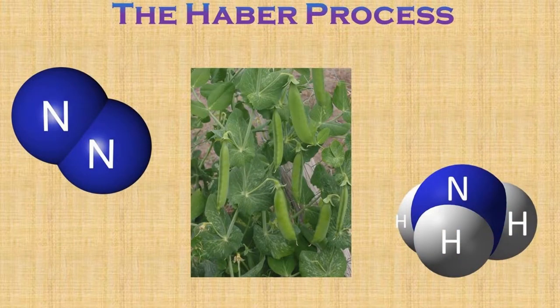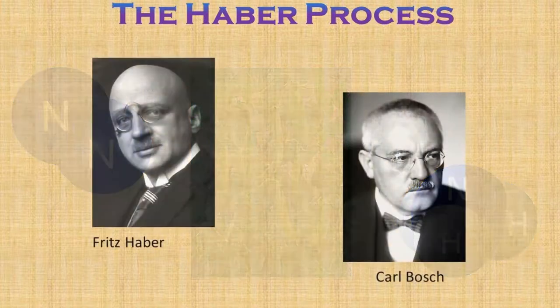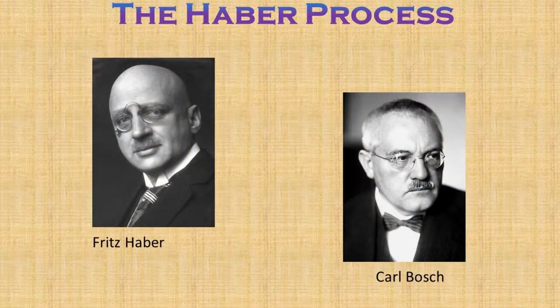Some plants can harness bacteria to convert nitrogen gas to a usable form, a process called nitrogen fixation, but most cannot. In 1909, Fritz Haber successfully synthesized ammonia from nitrogen and hydrogen gases in the laboratory. By 1913, a team at BASF led by Carl Bosch had developed this into an industrial process known now as the Haber-Bosch process.